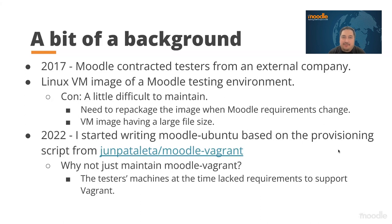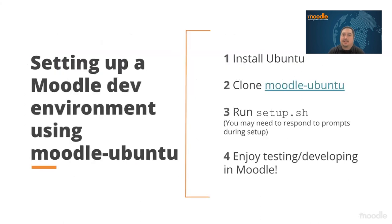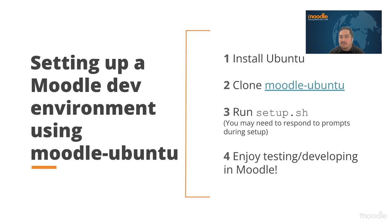How do you set up an Ubuntu machine? It's basically four simple steps. You make a fresh installation of Ubuntu, you clone the Moodle Ubuntu repository, and then run the setup script — it will do everything for you. You may need to respond to some prompts during setup, but it should be pretty easy. After that, you can start testing or developing in Moodle.